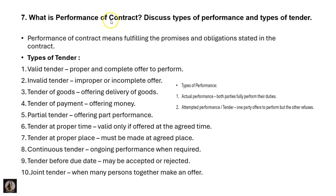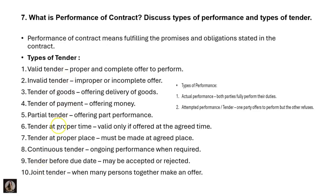The next question: what is performance of contract? Discuss the types of performance and types of tender. Performance of contract means fulfilling the promises and obligations stated in the contract. Types of tender include: valid tender, invalid tender, tender of goods, tender of payment, partial tender, tender at proper time, tender at proper place, continuous tender, tender before due date, and joint tender. Types of performance are actual performance and attempted performance.